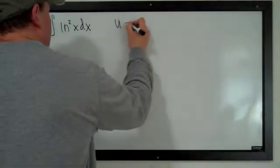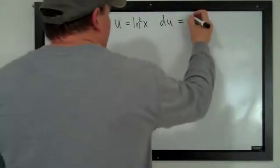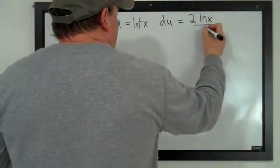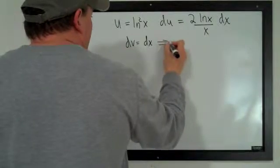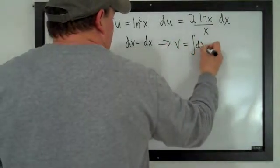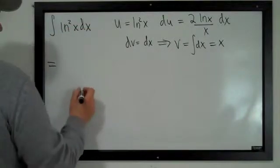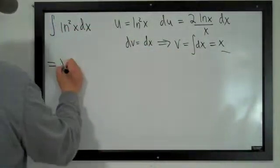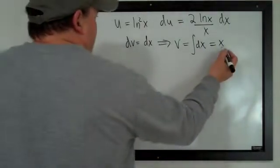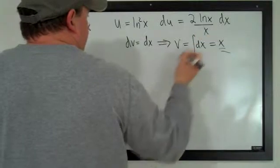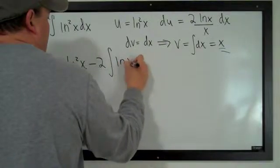This time I'm going to take u to be log squared of x. Then du, again using the chain rule, will be 2 log x divided by x, dx. dv is dx, so v is the integral of dx, which is just x. Putting these in, we have the integral of log squared of x dx equals uv, so x log squared of x, minus the integral of v du. The x's cancel, and we pull the 2 outside, giving 2 times the integral of log x dx.